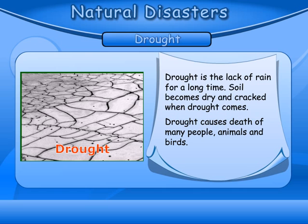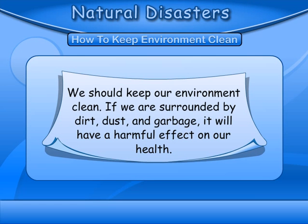Drought: Drought is the lack of rain for a long time. The soil becomes dry and cracked when drought comes. Drought causes the death of many people.